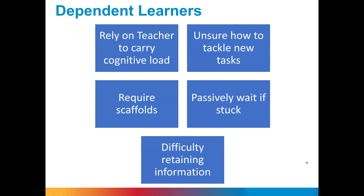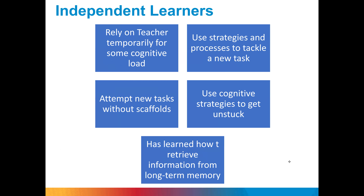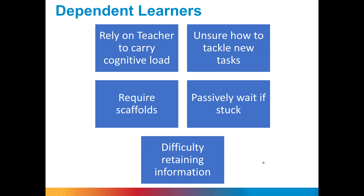Dependent learners rely on the teacher to carry the cognitive load. They're unsure how to do new things, require scaffolds — supports getting them from here to there — and will passively wait if they're stuck. They have difficulty retaining information. Independent learners rely on the teacher only temporarily. They have strategies to tackle new tasks, attempt tasks without scaffolds, use cognitive strategies to get unstuck, and have learned how to retrieve information from long-term memory. Independent learners became this way because they had support, good school systems, belief, family support, and resources. Dependent learners aren't this way because something is inherently wrong — circumstances led to this.